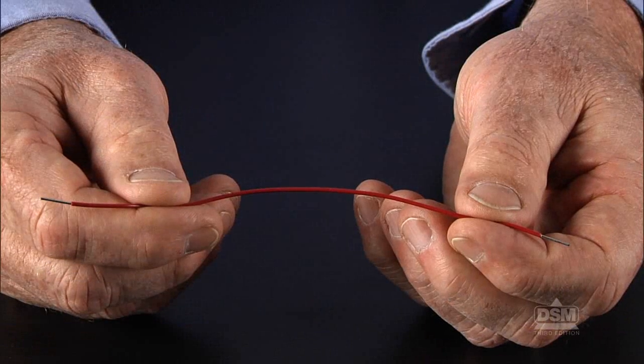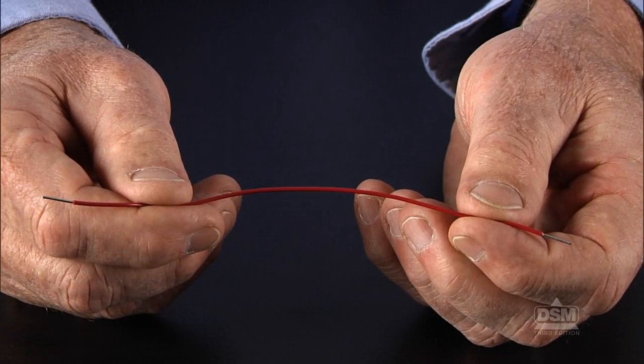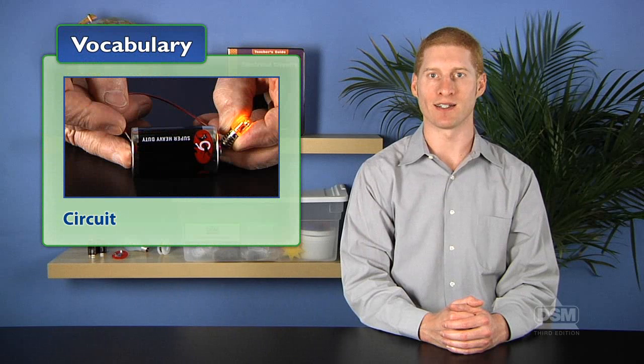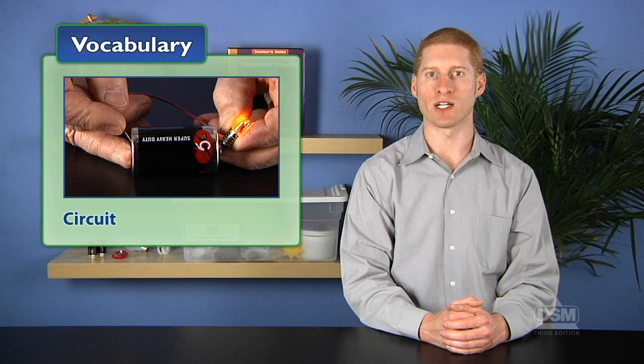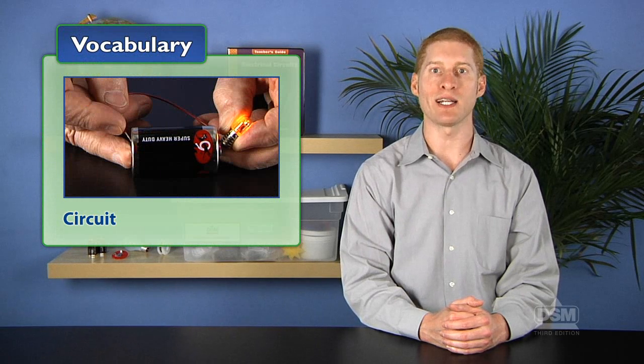Guide students to realize that batteries only store energy and that a pathway, such as a wire, is required for the electrons to flow. Therefore, for electricity to occur, a set of electrical elements called a circuit must be connected. The elements of a circuit often include a battery, wires, and a light bulb or other receiver.